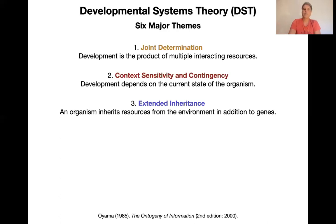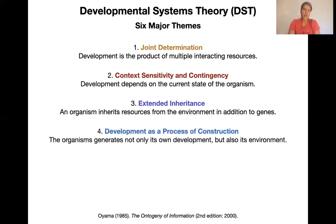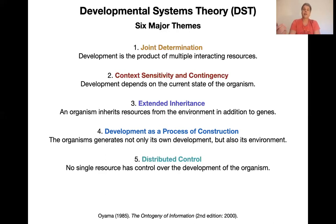Fourth, development is seen as a process of construction — the organism generates not only its own development but also its environments, similar to Dennis Walsh's view introduced earlier. Fifth — and very important — is distributed control. Developmental systems theory denies that any single resource controls development. The idea of a genetic program, genetic primacy, or gene agency is completely alien here. Genes are genuinely seen as acting within a much more complex context of interacting resources.